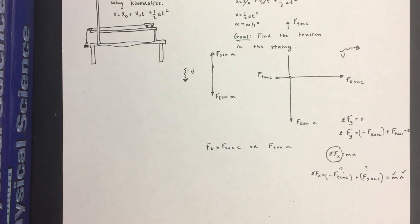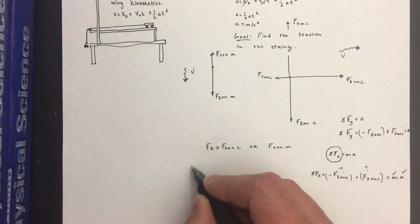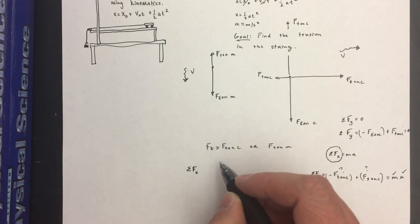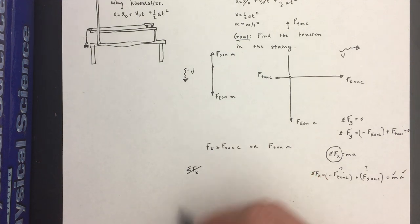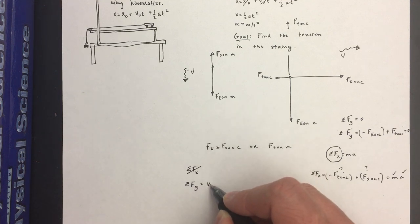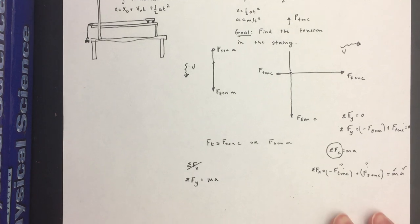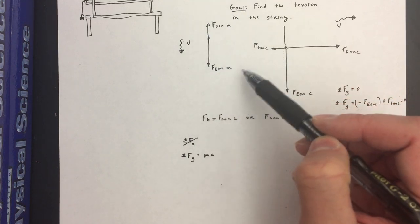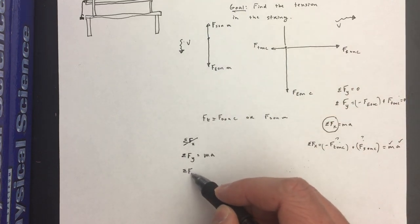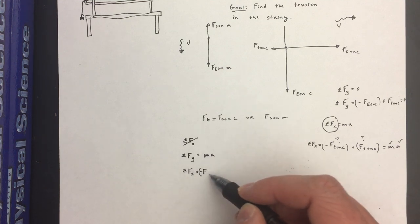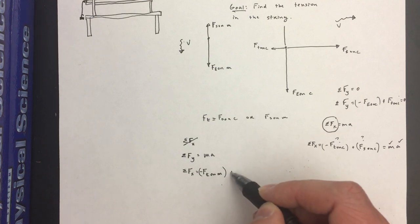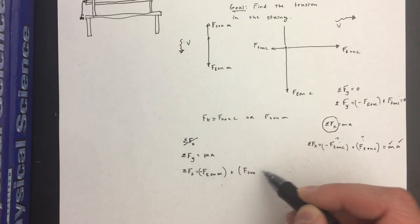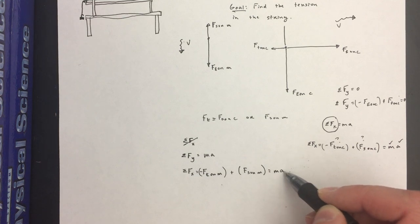So we start with the hanging mass as our system. There are no forces in the x-direction, so we ignore that. We apply Newton's second law in the y-direction: F = ma. Breaking out the individual forces, the sum of forces in y equals the negative force of the earth on the mass plus the positive force of the string on the mass, equals mass times acceleration.